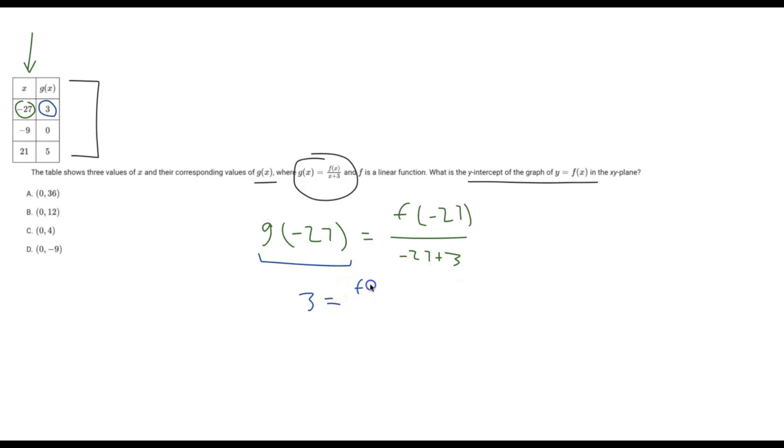So if we write this out, we have f of negative 27, and then negative 27 plus 3 is just going to be negative 24. And so now we can just isolate for f of negative 27. So 3 times negative 24 is going to be negative 72 equals f of negative 27.